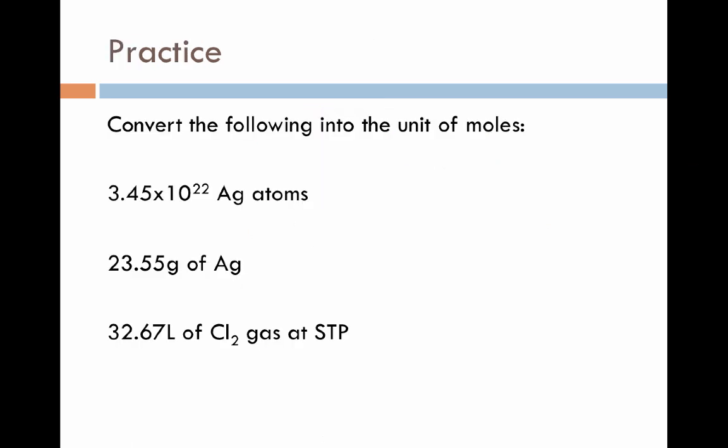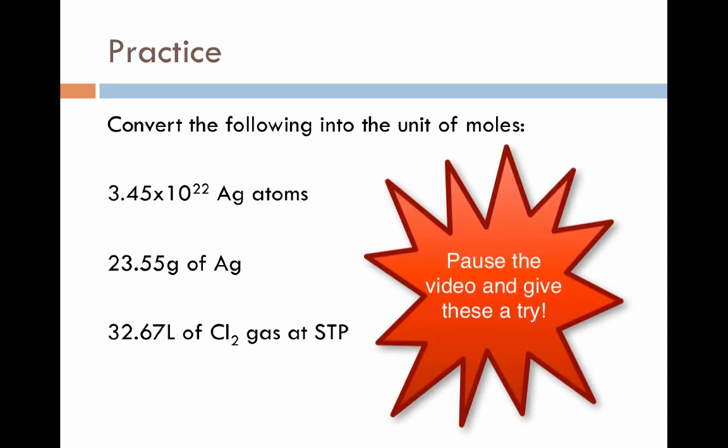So let's wrap this video up with a couple example problems. For the three of these down below, I want you to convert each of them into the unit of moles. We have 3.45 times 10 to the 22nd silver atoms, 23.55 grams of silver, and 32.67 liters of chlorine gas at standard temperature and pressure. Use the flow chart from the previous page, use the conversion factors we've identified along with some dimensional analysis, and see if you can convert these all into moles.